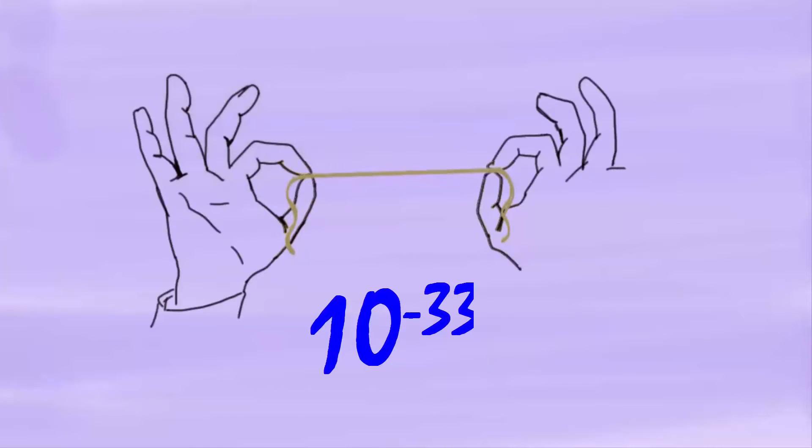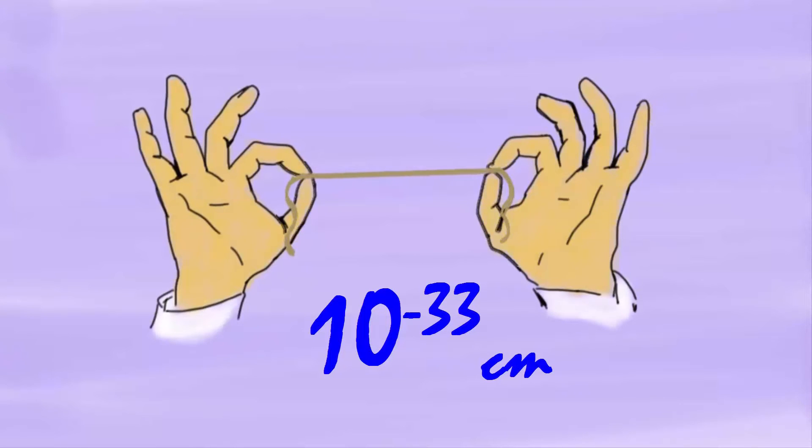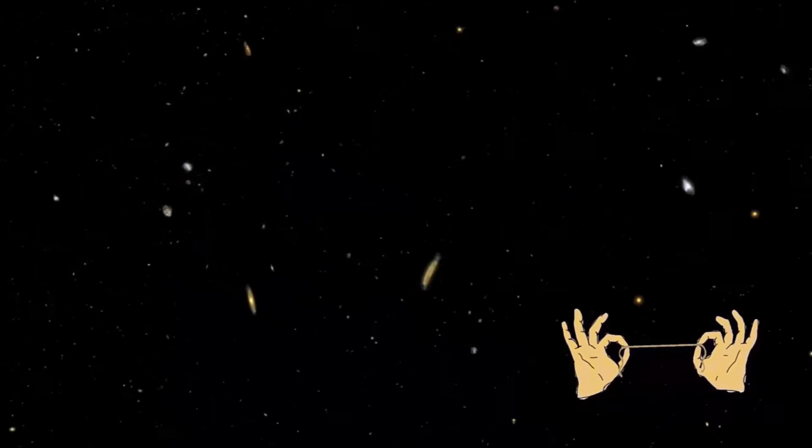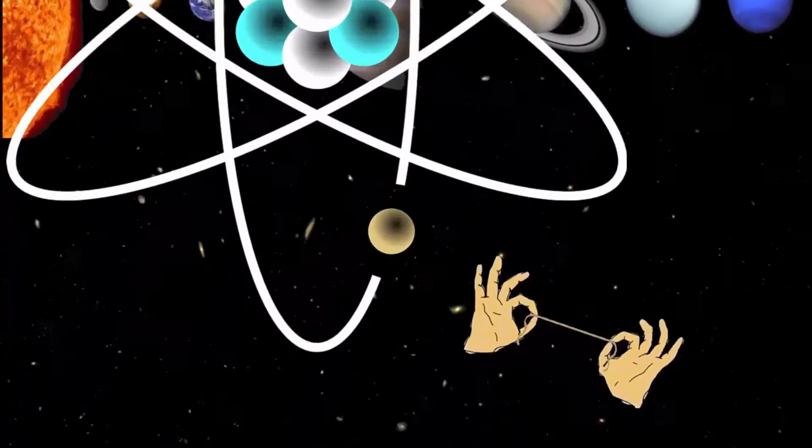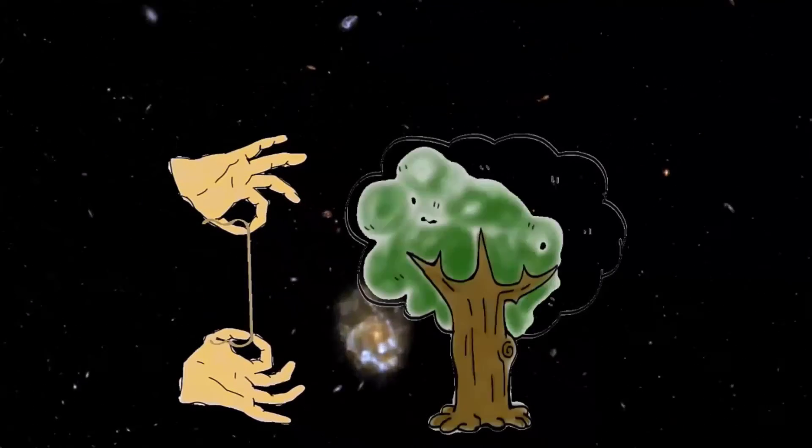The size of these strings are about 10 to the negative 33 centimeters long, and that might be a bit hard to visualize. So, now let's say if we made an atom the size of the solar system, a string will be about the size of a tree.